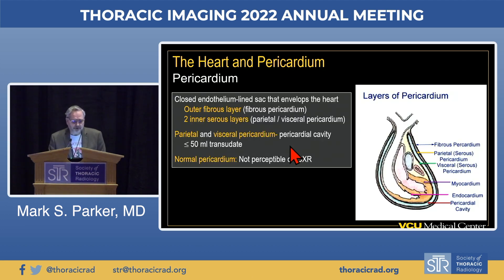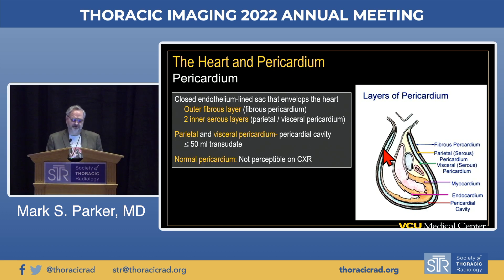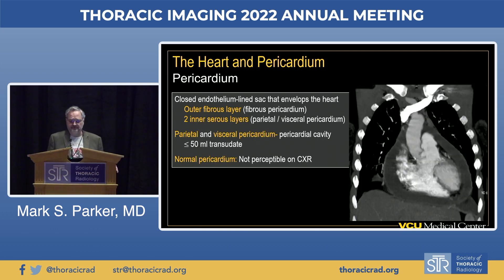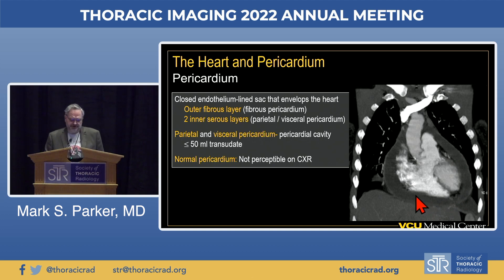The pericardium is a closed endothelial sac that envelops the heart and the proximal great vessels. It's comprised of an outer fibrous layer and two inner serous layers with a potential space housing pericardial fluid—normally about 50 milliliters or less—which is transudative and not typically perceptible on the radiograph. Whether it's fluid or air in the pericardial sac, it will not extend more cephalad than the proximal extent of the pericardial reflection attachment on the vascular pedicle.